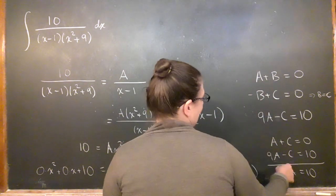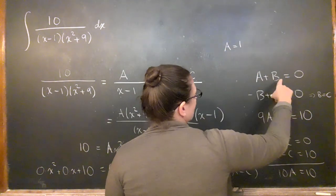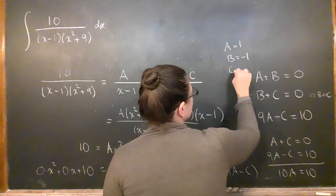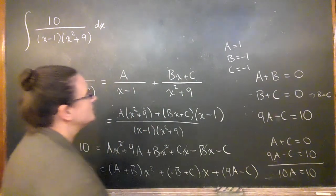So I immediately have a equals 1, b equals negative 1 from this one, and then c also equals negative 1, right? Because b equals c. So that's my solution.